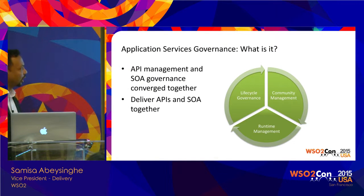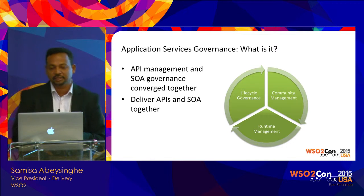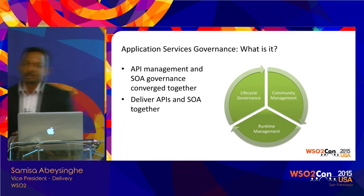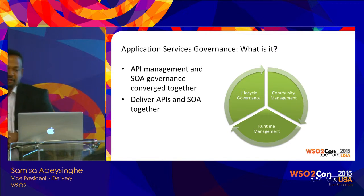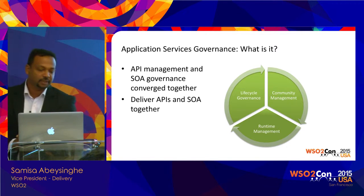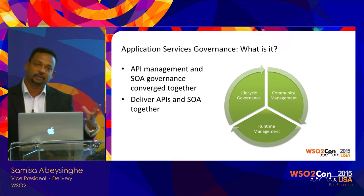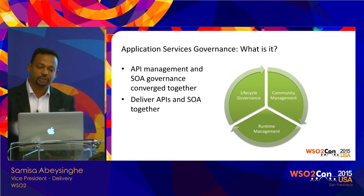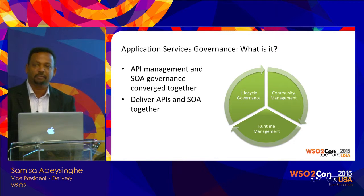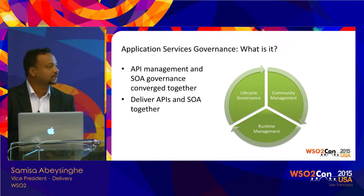Gartner defines application services governance as the combination of API management and SOA governance. The two practices converge together — it is about delivering APIs on top of your service-oriented architecture.